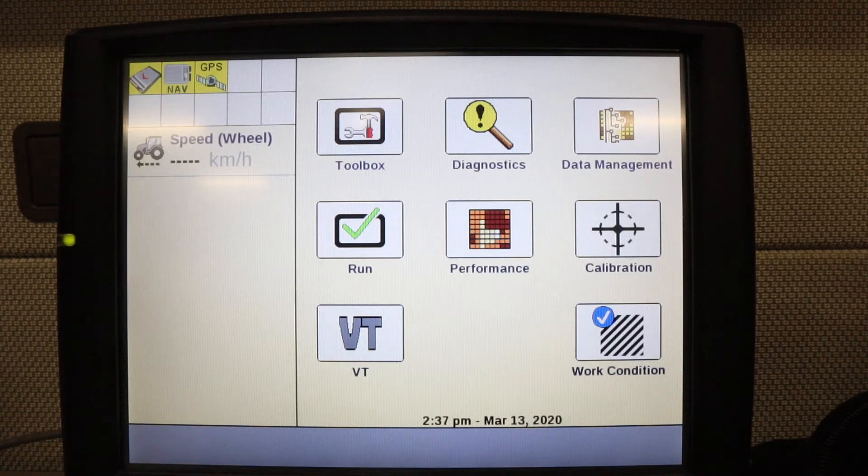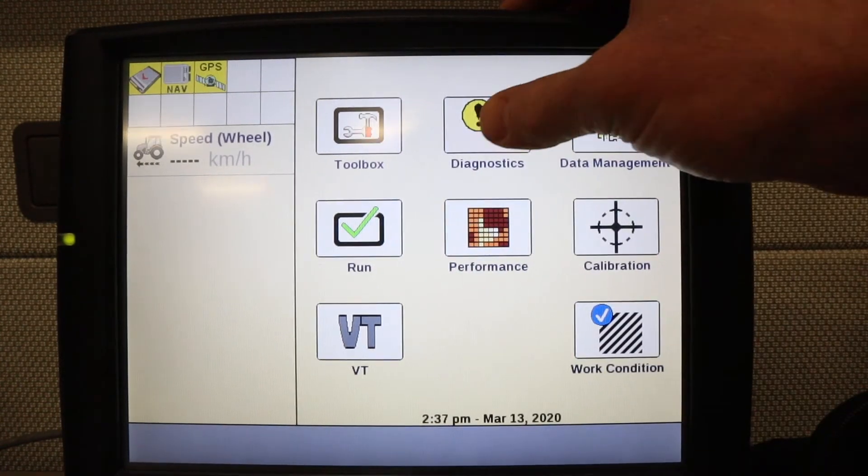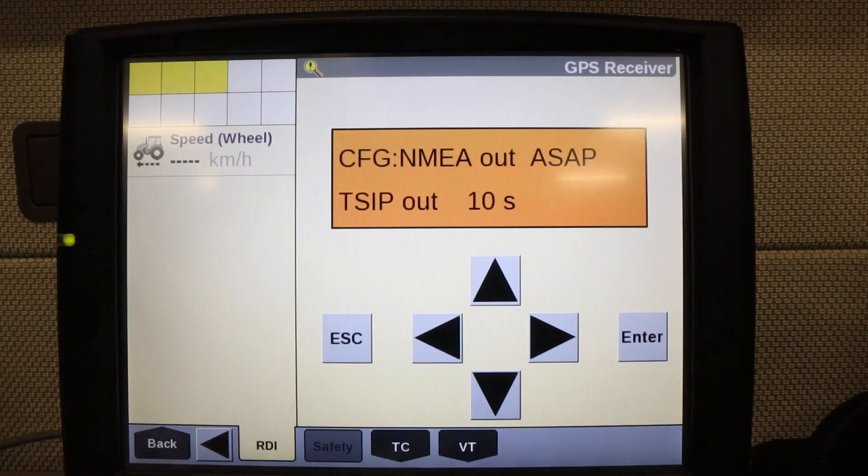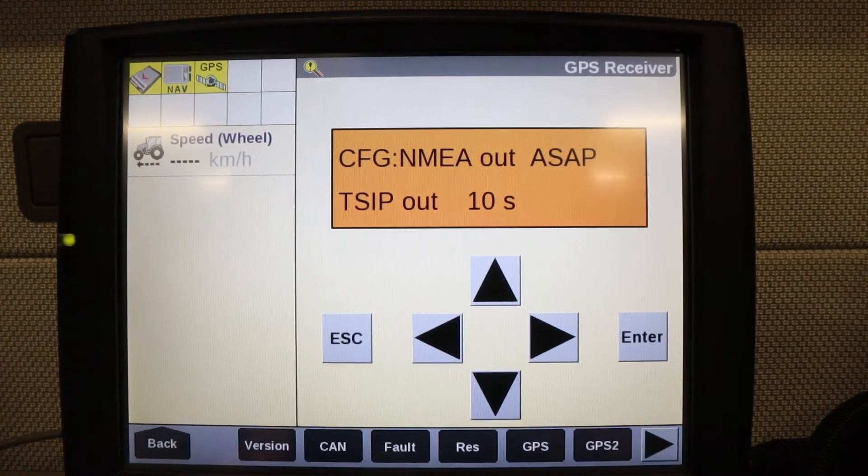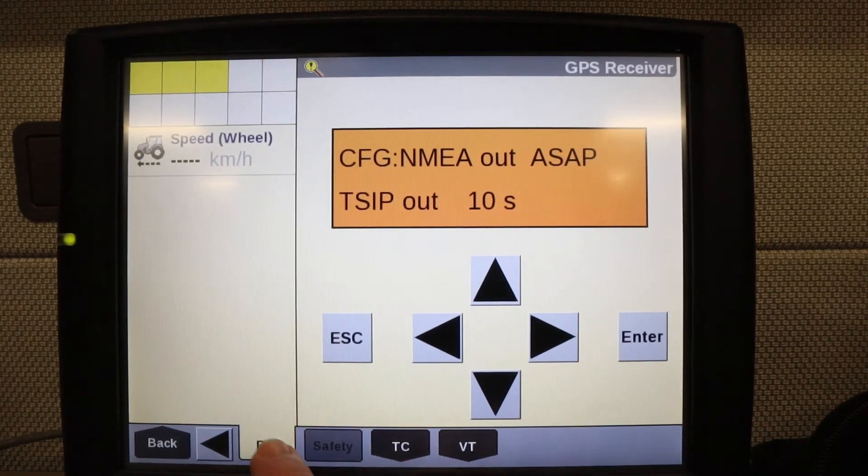To set up the monitor, you're going to go to the Diagnostics button. Then you need to find at the bottom of the screen the RDI tab. You can use these arrows to navigate until you find RDI.